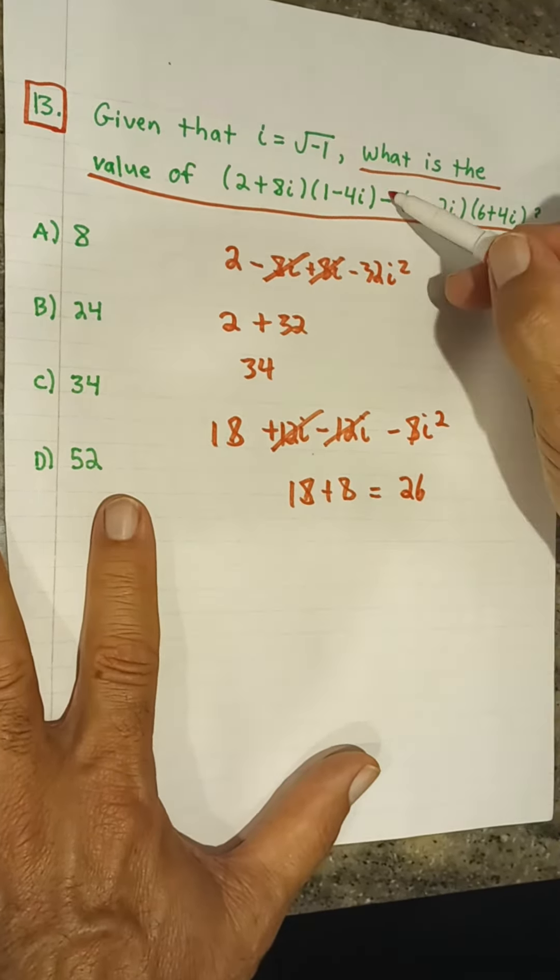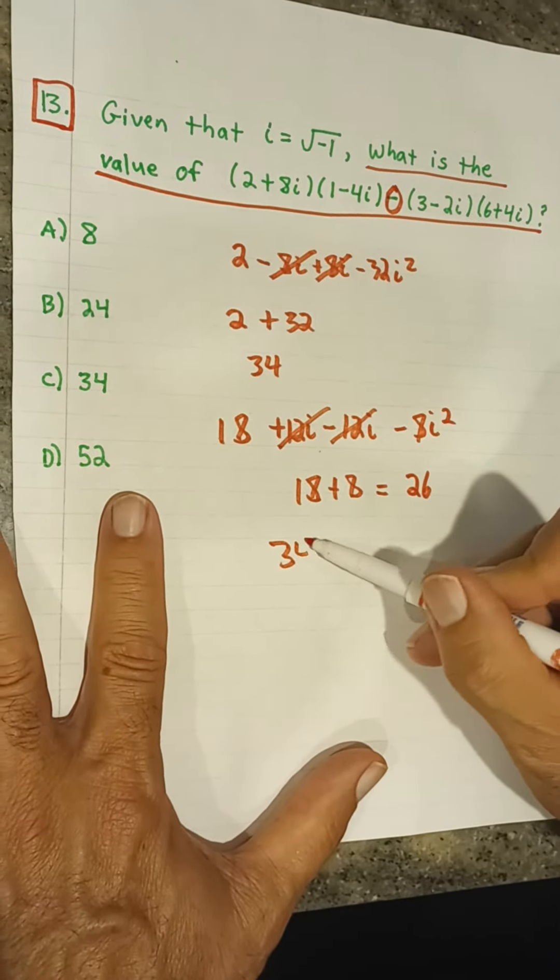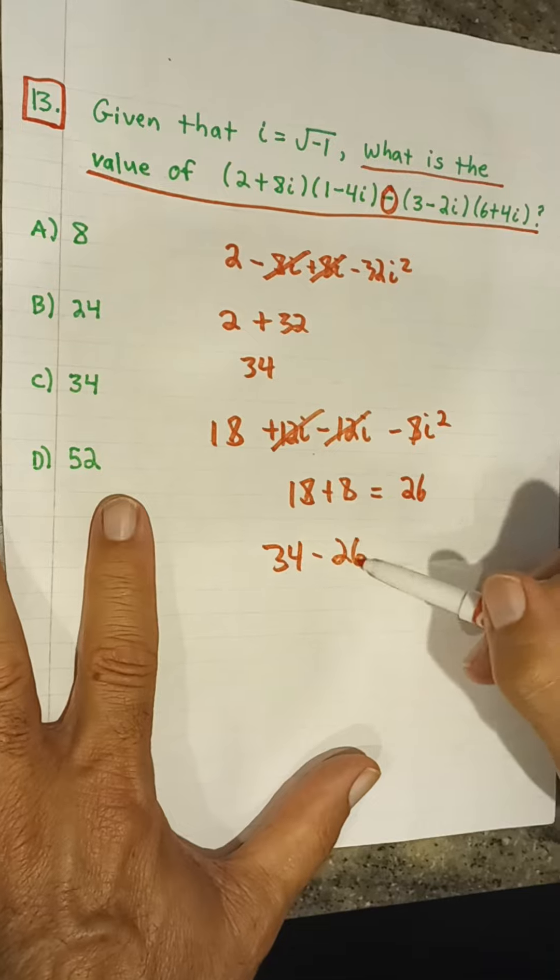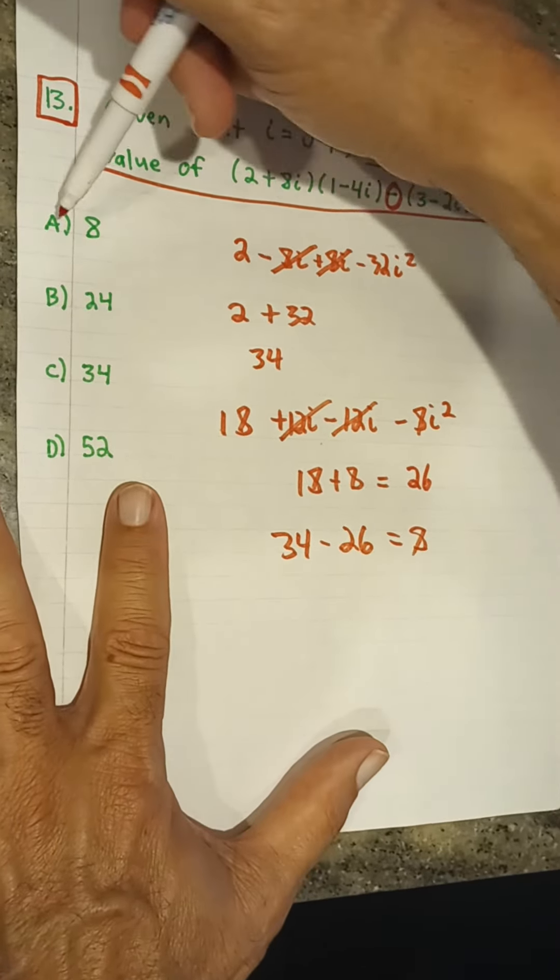So here, again, we're subtracting these, right? So here we have 34 minus 26. And our answer is 8, which is answer A.